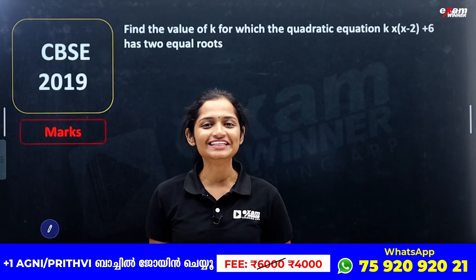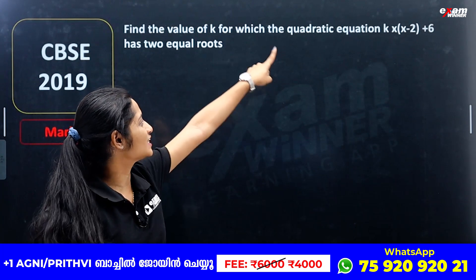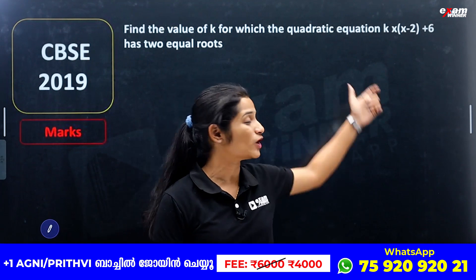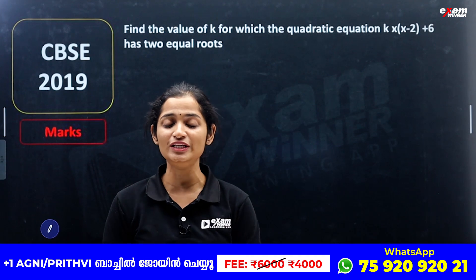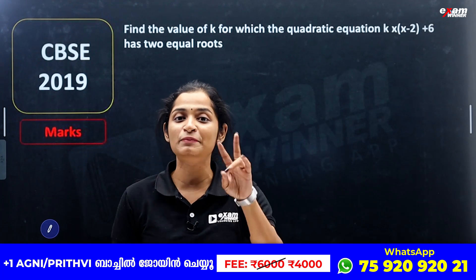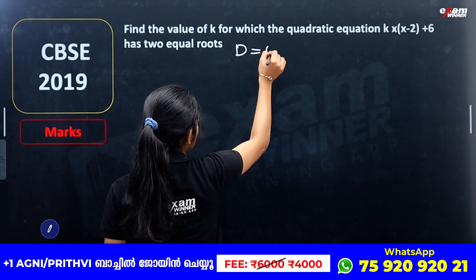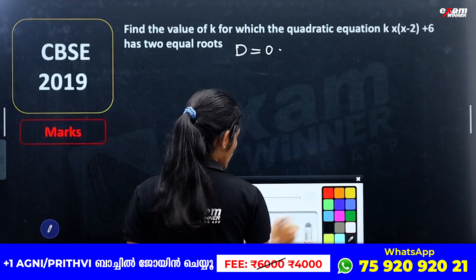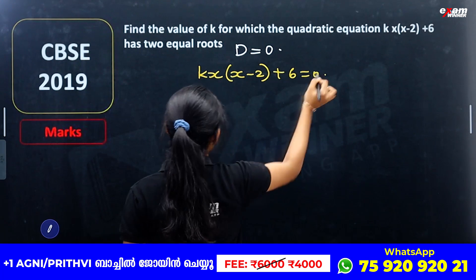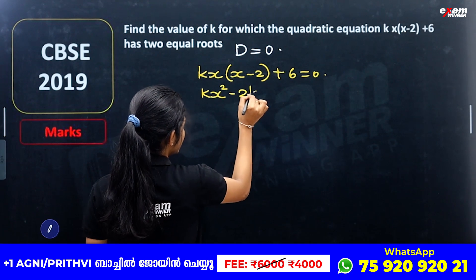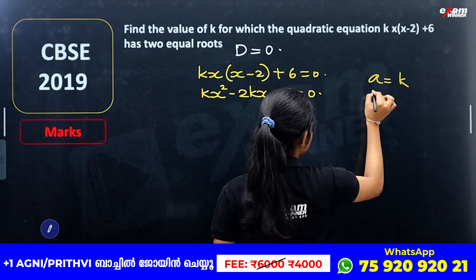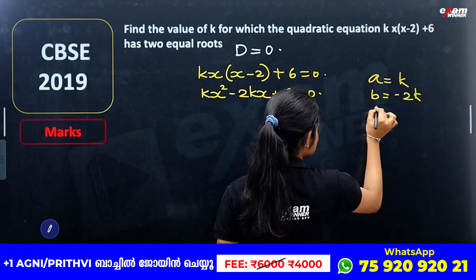Here is the next question: Find the value of k for which the quadratic equation kx(x - 2) + 6 = 0 has two equal roots. For two equal roots, the discriminant is equal to 0. We will expand: kx² - 2kx + 6 = 0. So a = k, b = -2k, and c = 6.